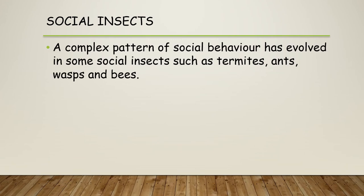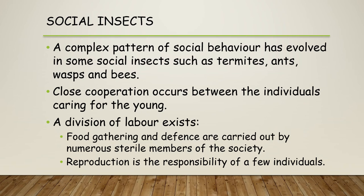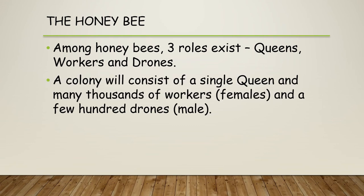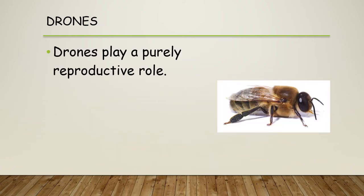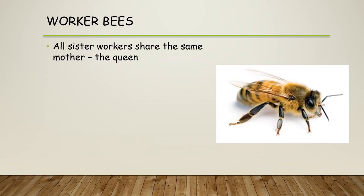We also have social behaviours and interactions in insects such as termites, ants, wasps, and bees — close cooperation with individuals caring for the young, a division of labour for food gathering and defence, and reproduction limited to a few individuals. In the honeybee there are three roles: queens, workers, and drones. There is only one queen and many thousands of female workers, with a few hundred male drones. Only the queen can produce eggs, which are fertilised by drones and develop into workers.